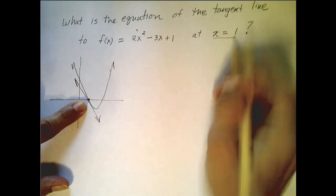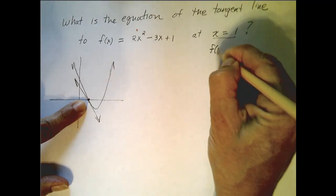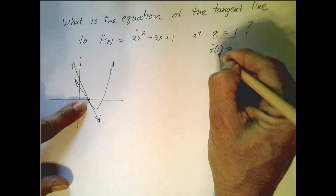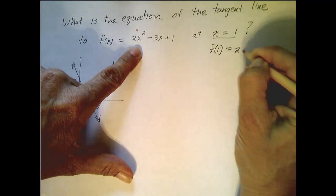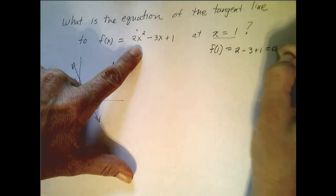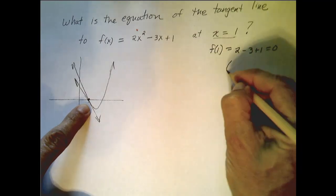Let's check. If I know my x value, I can find my y value by plugging the x value into my function. So 2 minus 3 plus 1, that indeed equals 0, so I do know a point, 1, 0.